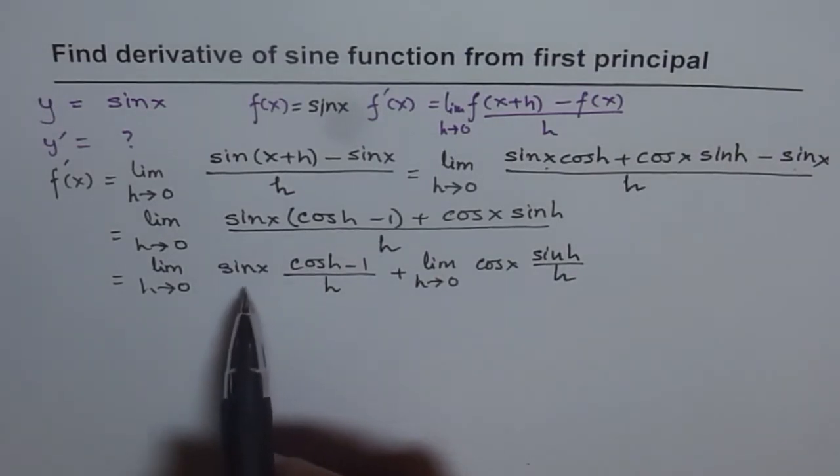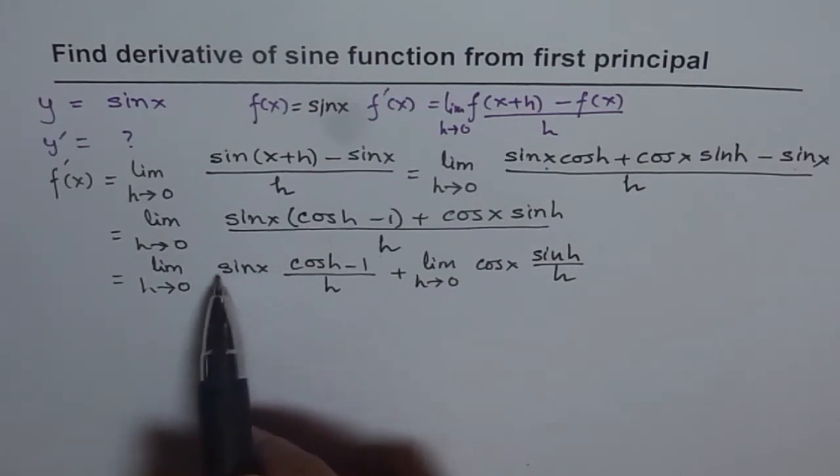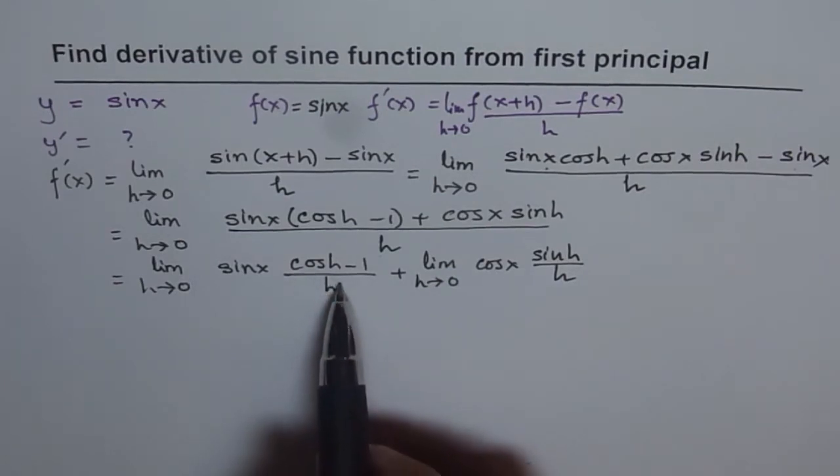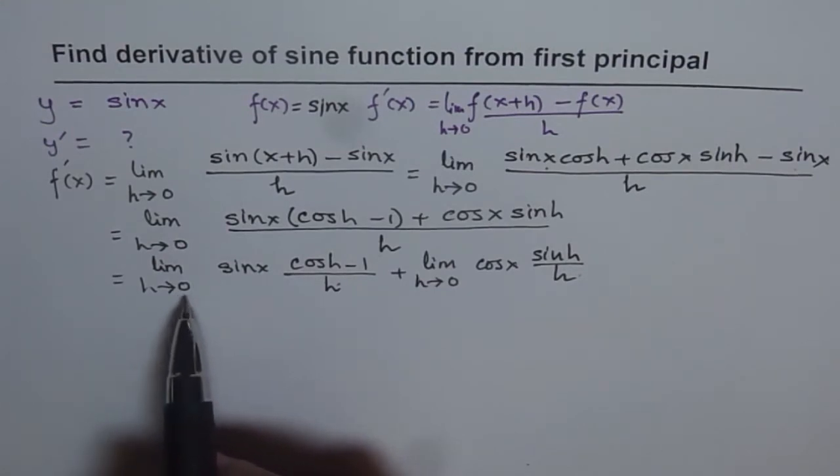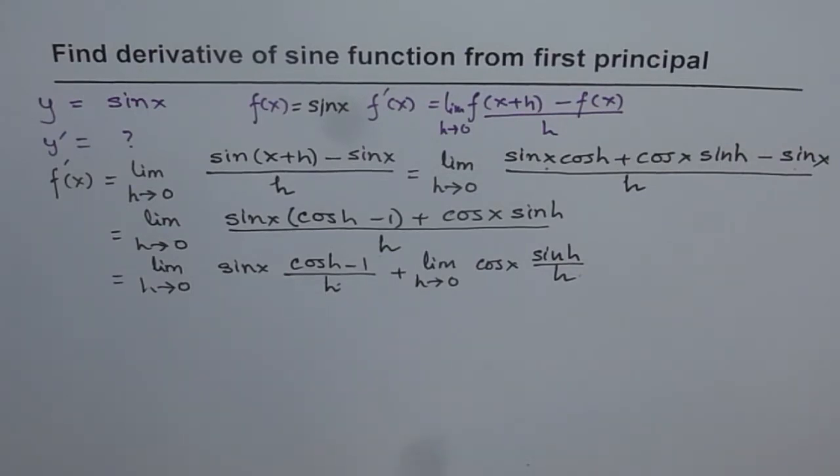Now see from this, sine x is independent of h. So when h approaches 0, nothing really happens to this. Similarly, for that matter cos x. But these two factors, they get affected by h. At this stage, if I put h equals to 0, what do I get? I get cos 0 minus 1 over 0, which is 0 over 0. So it is indeterminate. How to find limit for these? Well, as you remember, we have already done it in limits.